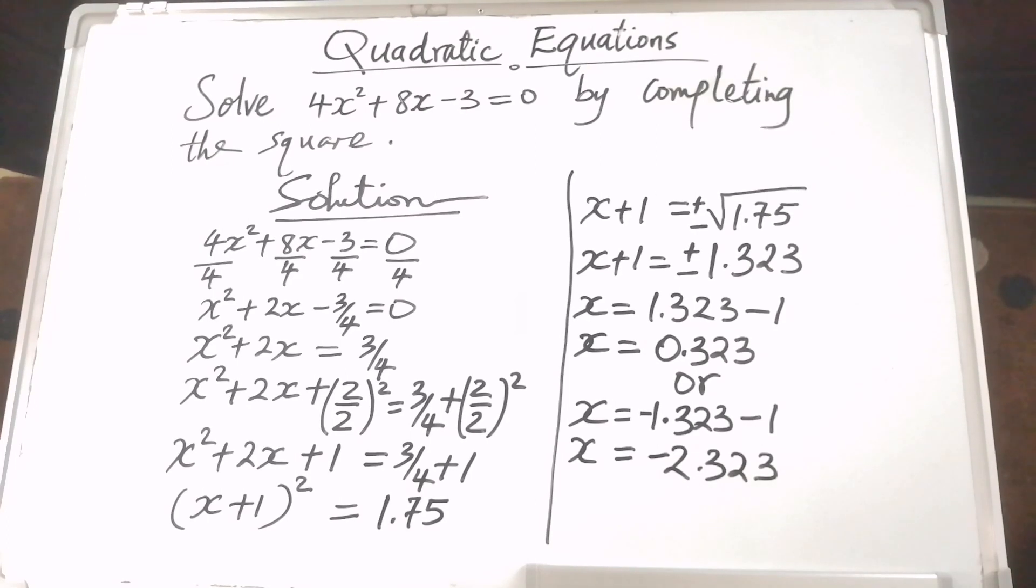Therefore, x has two values, and those are 0.323 or negative 2.323. Those are the solutions to that quadratic equation. Thank you.